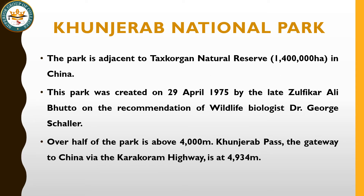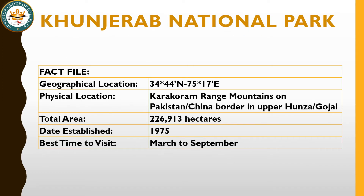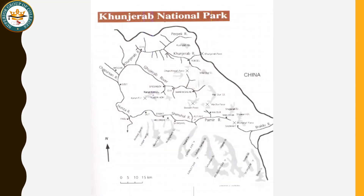If we talk about the elevations, almost half of the park is at 4,000 meter elevation. The park is located on the area of Pakistan and China, along the Karakoram Highway at an elevation of 4,934 meters. The geographical coordinates are given and the physical location is in the mountainous ranges on the Pakistan-China border in Hunza Valley. It was established in 1975 and March to September is the best time to visit.